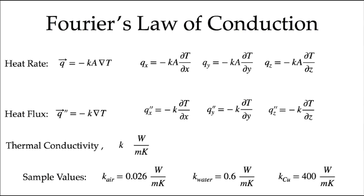Conduction heat transfer is governed by Fourier's law of conduction. The heat rate or heat flux is a vector quantity, and it can have components in each of the three coordinate directions. Fourier's law tells us that the heat flux vector equals the conductivity — a material property — times the area through which heat is transported, times the temperature gradient in that material. There is a negative sign because heat moves from high temperature to low temperature; the heat flows against the temperature gradient.